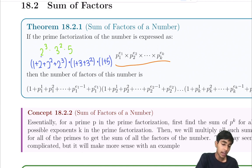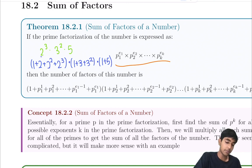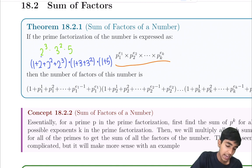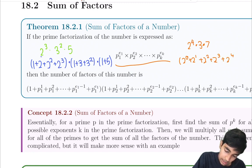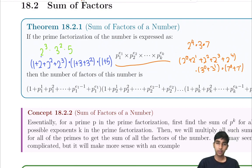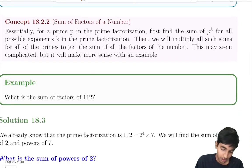Let's try another quick example: 2 to the 4th times 3 times 7. The sum of factors is just (2⁰ + 2¹ + 2² + 2³ + 2⁴) times (3⁰ + 3¹) times (7⁰ + 7¹). That's another really cool trick.